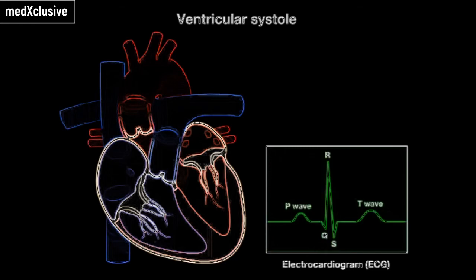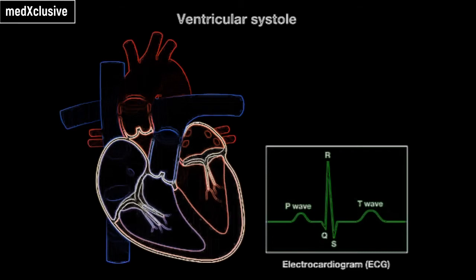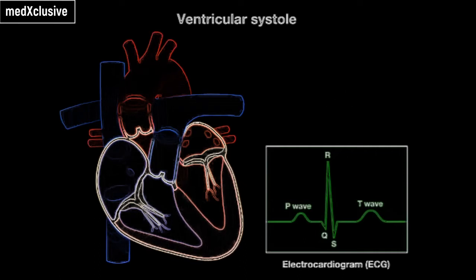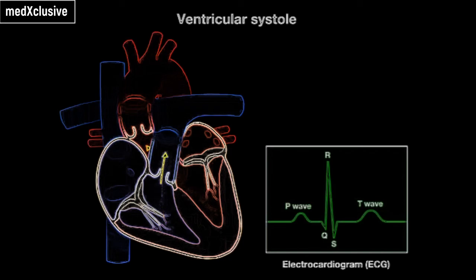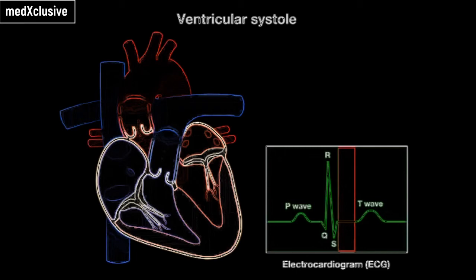In ventricular systole, or contraction, increased pressure in the ventricles forces the AV valves closed. The heart sound associated with the closure of the AV valves is known as S1, often described as LUB. With continued contraction, ventricular pressures increase until they are higher than those in the pulmonary trunk and aorta. At this point, the pulmonary and aortic valves open, and blood is ejected from the ventricles. Ventricular systole is represented by the ST segment on the ECG.